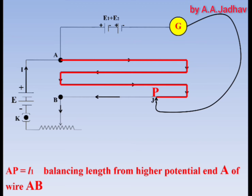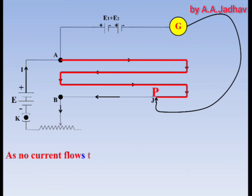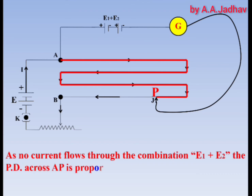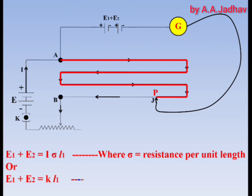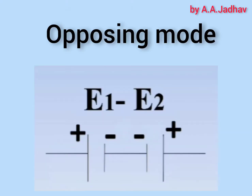Since no current is flowing through the combination E1 plus E2, the potential difference across AP is proportional to the EMF E1 plus E2. Therefore, E1 plus E2 equals I·sigma·L1, where sigma is the resistance per unit length of the potentiometer wire, or equivalently E1 plus E2 equals k·L1, where k is the potential gradient. Consider this as Equation 1.